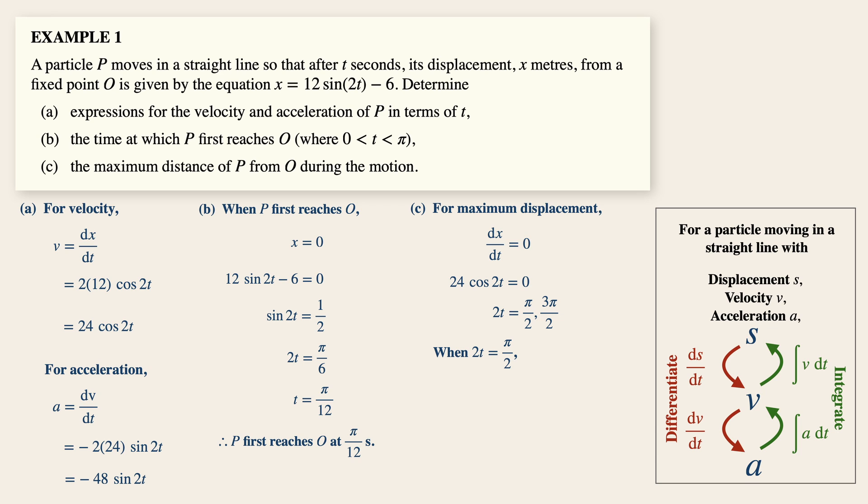So at pi over 2, the displacement is 6. And while at 3 over 2 pi, the displacement is minus 18. But the question wants us to find the maximum distance and not the displacement. Thus, in this case, the maximum distance is actually just 18 and not minus 18.